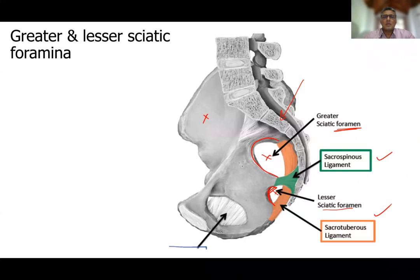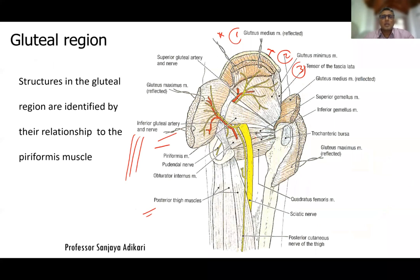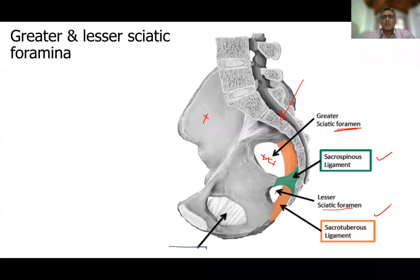The neurovascular structures — superior gluteal vessels and nerve, inferior gluteal vessels and nerve, the sciatic nerve, and the posterior cutaneous nerve of the thigh — all enter the gluteal region through the greater sciatic foramen. The piriformis muscle also enters through the greater sciatic foramen; its proximal attachment is to the middle three pieces of the sacrum. Above the piriformis you get superior gluteal vessels and nerve; below it you get inferior gluteal vessels and nerve, the sciatic nerve, and posterior cutaneous nerve of the thigh.